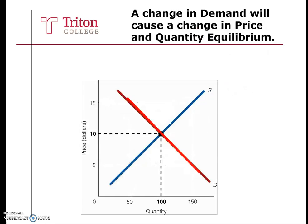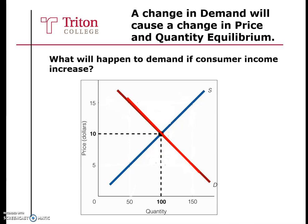Let's take a look at what happens to price and quantity equilibrium due to a change in demand. What will happen to demand if consumer income increases? As consumer income increases, demand will increase. We see this shift from curve D to D2. When demand increases, price will also increase — from 10 to 15 in this case — and quantity equilibrium will also increase from 100 to 150.